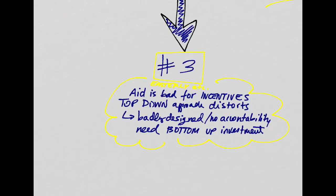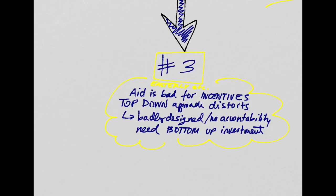The third view, held by Bill Easterly and many others, says that aid could not possibly work for many different reasons. For example, aid is bad for incentives — the top-down approach typically used in foreign aid actually distorts developing economies. Aid programs are usually badly designed with no accountability, leading to a lot of corruption and leakage of funding. Overall, we needed to pay more attention to how things work at the bottom, at the grassroots level, in order for aid to work.